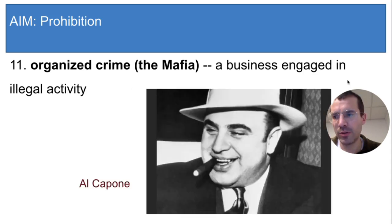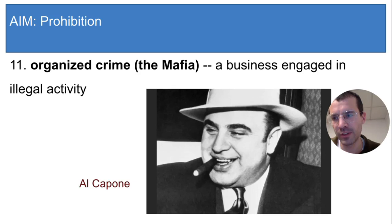This man is Al Capone, the most famous gangster of the 1920s. Capone led organized crime in the city of Chicago and was responsible for ordering at least 400 murders. You can think of organized crime and Prohibition as similar to the illegal drug trade today — there's a lot of violence as drug dealers attempt to eliminate their competition. In both cases, the violence results from the fact that the products being sold are illegal.